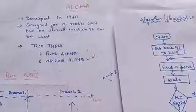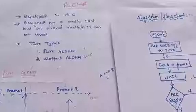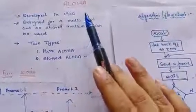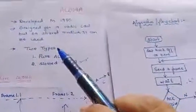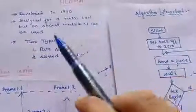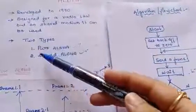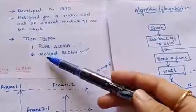The ALOHA protocol was developed by the University of Hawaii in the early 1970s. It is designed for radio or wireless LAN, but can be used on shared medium. The ALOHA protocol is divided into two types: pure ALOHA and slotted ALOHA.